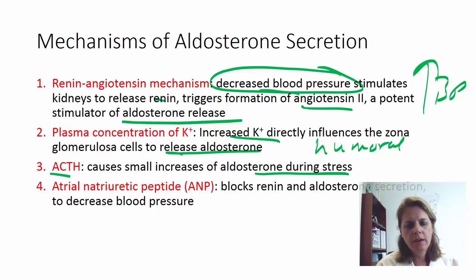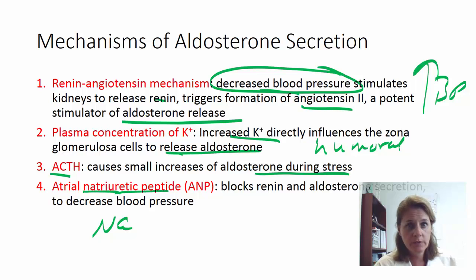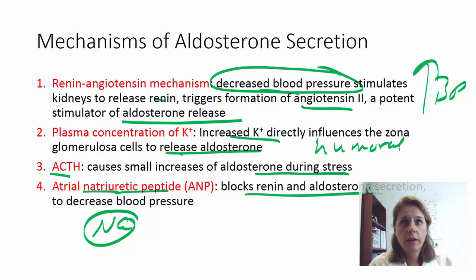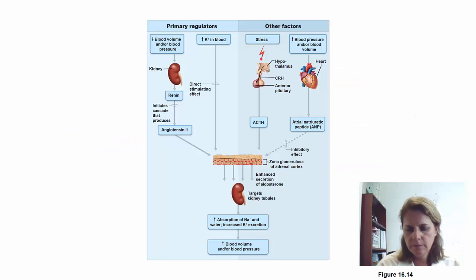Atrial natriuretic peptide (ANP) is a hormone made by the heart. Natriuretic refers to sodium — the original word for sodium is natrium, which is where we get the Na symbol. ANP blocks renin and aldosterone secretion and decreases blood pressure.